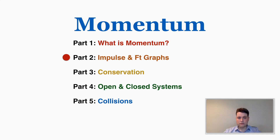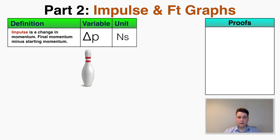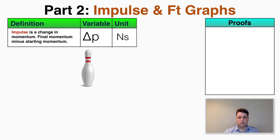This is the second video in our series on momentum, and this video is going to be on impulse and force-time graphs. Impulse is a change in momentum — the literal amount that momentum changes by in an object. It's equal to the final momentum of an object minus the starting momentum. Because it's a change in momentum, the variable for impulse is delta p. The units of impulse are Newton seconds, just like momentum itself.